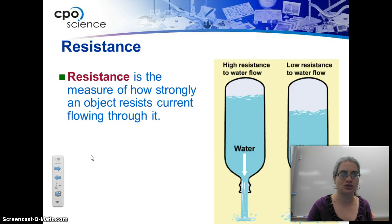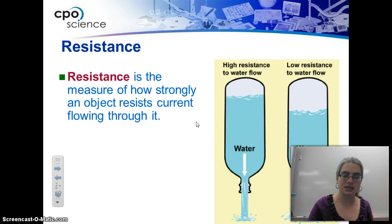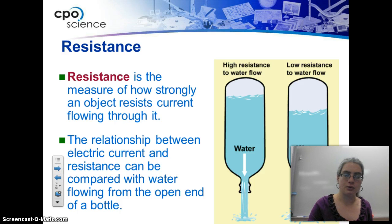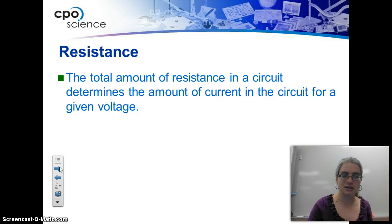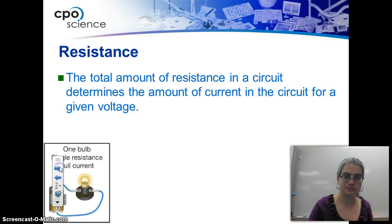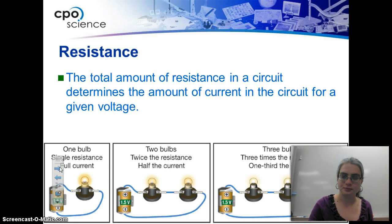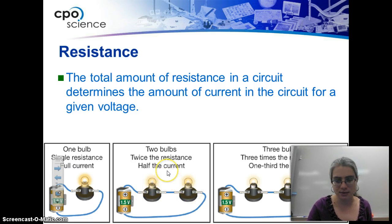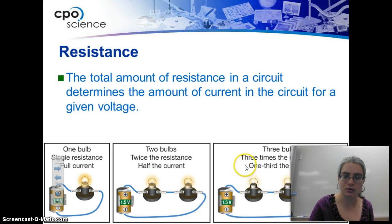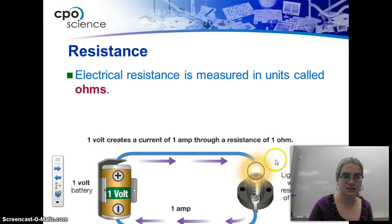Resistance is a measure of how strongly an object resists current flowing through it. With low resistance, the water just keeps flowing through; with high resistance, more work needs to be done for flow to occur. The relationship between electric current and resistance can be compared to water flowing from the open end to the closed end of a bottle. Total resistance in a circuit determines the amount of current for a given voltage. With one bulb it's very bright; two bulbs means twice the resistance and half the current, giving a less bright bulb. With three bulbs in series, one-third of the current goes to each bulb, so less energy travels through and less work is done. Resistance is measured in ohms.